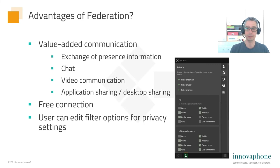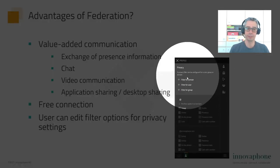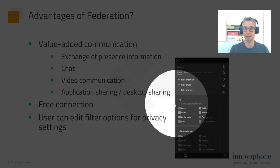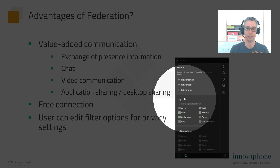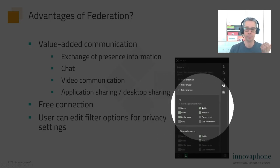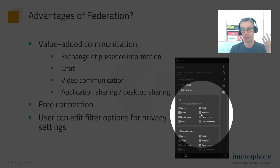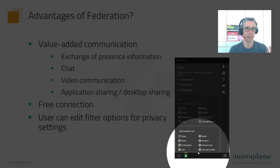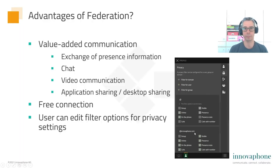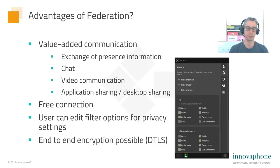It's absolutely possible to decide which features the other person sees from you. When connected via the internet, you can set it so only your online status on the phone is visible. When you are part of Innova Phone, you can see my presence note and even who I'm on a call with. I give more information to my colleagues than to other persons on the internet. And we have end-to-end encryption, so it's absolutely secure.